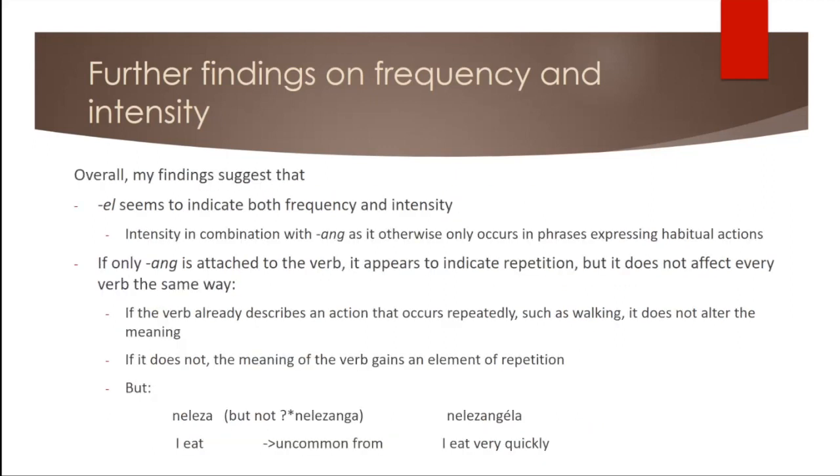So based on that, it would seem that if both ang and L are affixed to the verb, L is a marker of intensity. But if L occurs in a different context, which was the only other one I found, then it's part of the construction expressing habitual actions. The morpheme ang is responsible for providing a sense of repetition, but as we've seen, it doesn't affect all verbs similarly. So it seems to me that the nature of the actions seems to be key here.